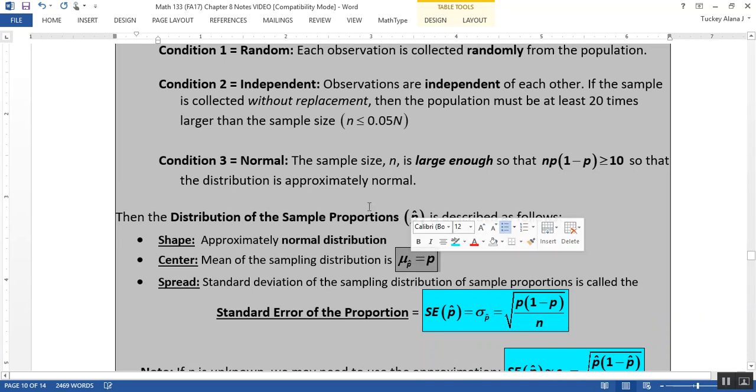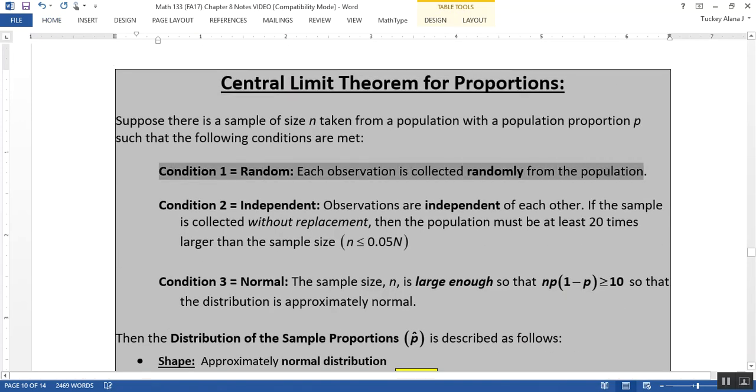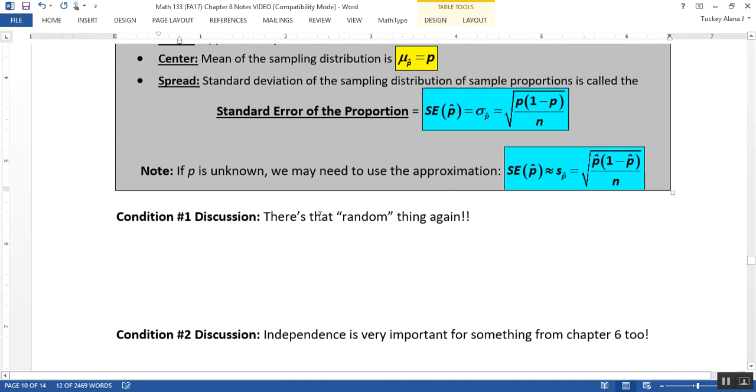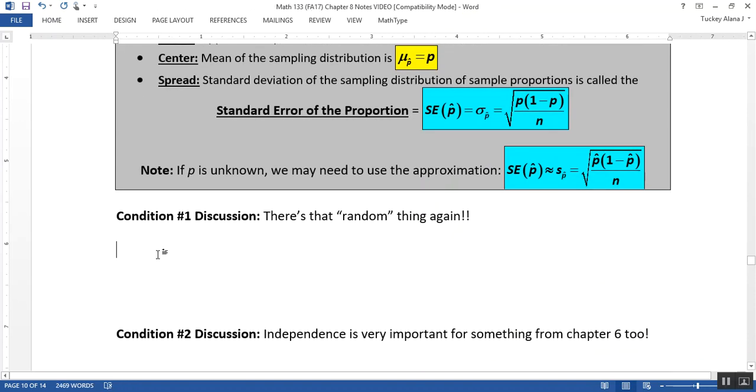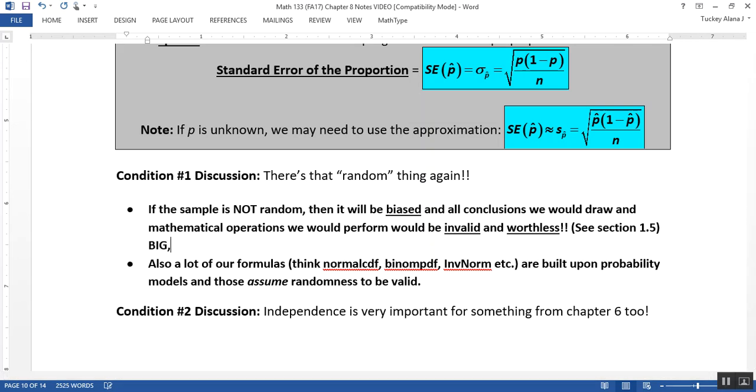So let's look at the conditions again. Condition 1 says it has to be random. Why is that important? It's the same reason it was important in section 8.1. You have to have random; otherwise the whole thing is biased and you've got big problems. If the sample's not random, it'll be biased and all the conclusions we would draw and mathematical operations we would perform would be invalid and worthless.